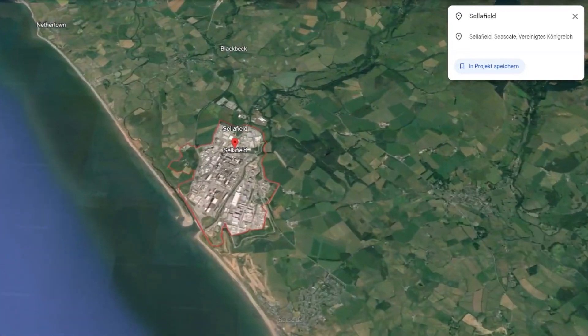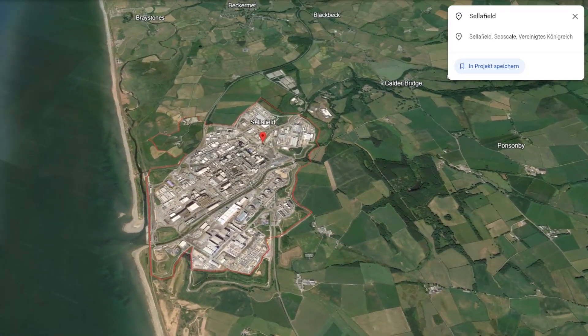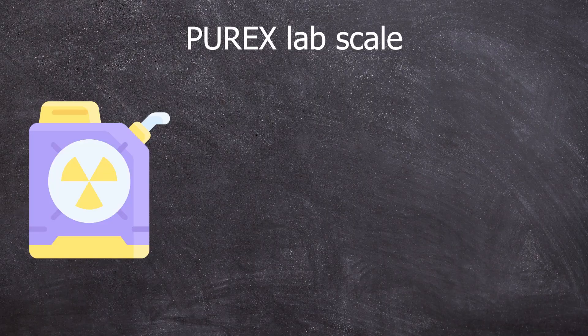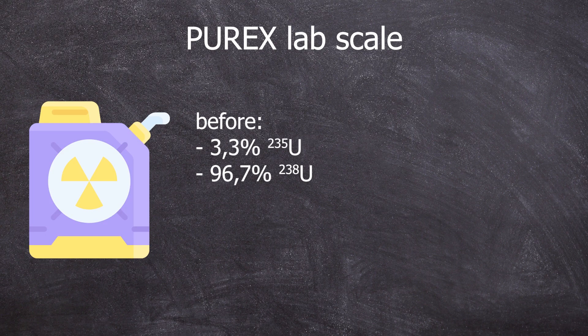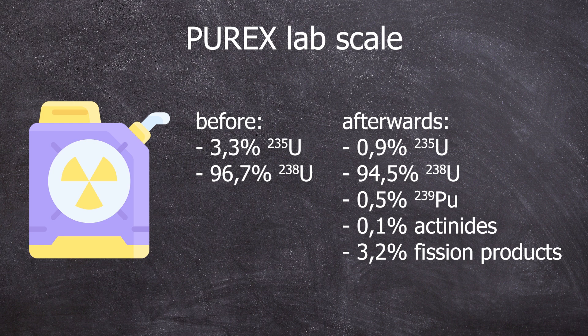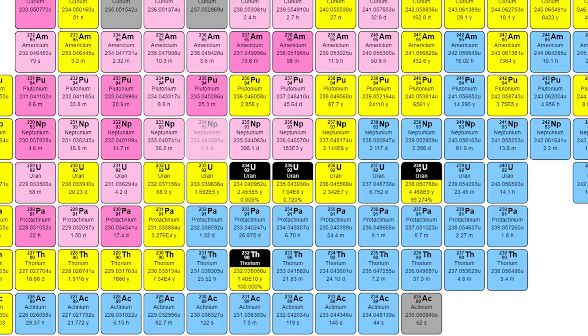When a fuel rod is used, a lot of things happen simultaneously. Let's assume a fuel with an enrichment level of 3.3% Uranium-235 and 96.7% Uranium-238. After burn-up, not all of the 3.3% Uranium-235 was fissioned — more like 70% — meaning we still have 0.9% Uranium-235. During this time, part of the Uranium-238 through neutron capture, i.e. an N-gamma reaction and subsequent beta decays, becomes Plutonium-239.